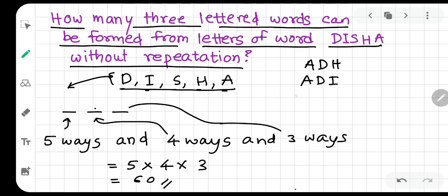Then it will be ADI, then ADS, then AHD, and so on. You can have total 60 different words which are three-lettered and made up of D, I, S, H, and A. The answer is very simple: 60 equals 5 into 4 into 3.